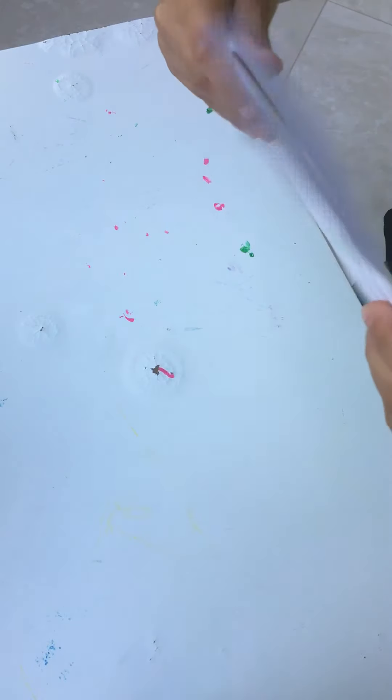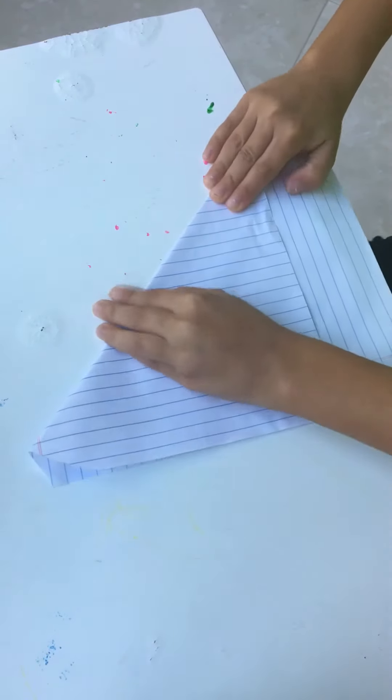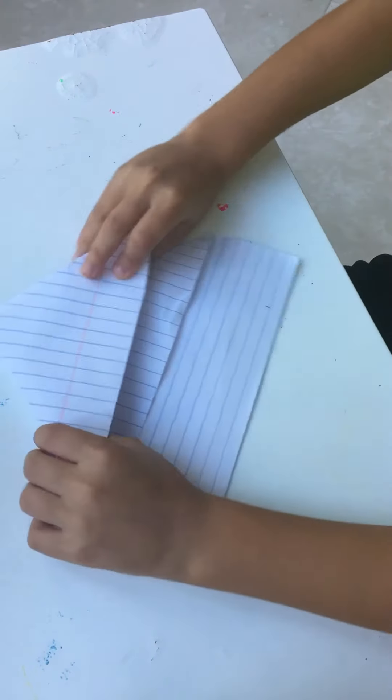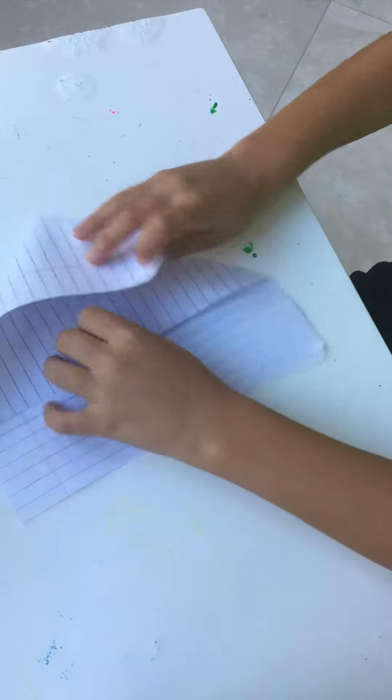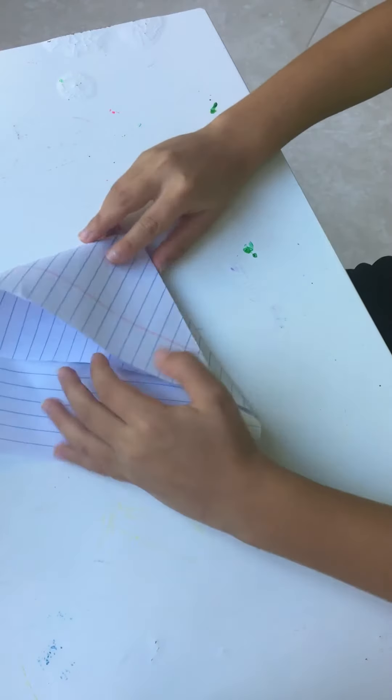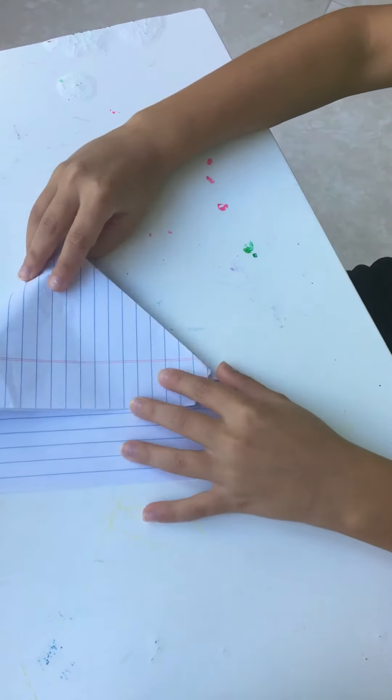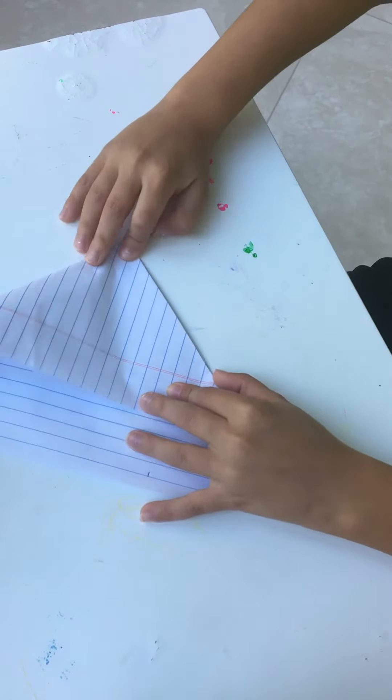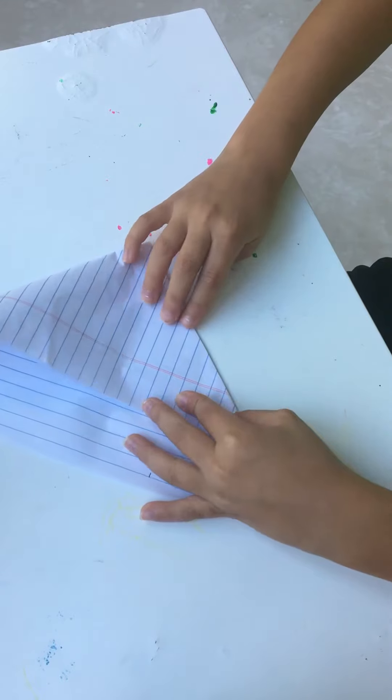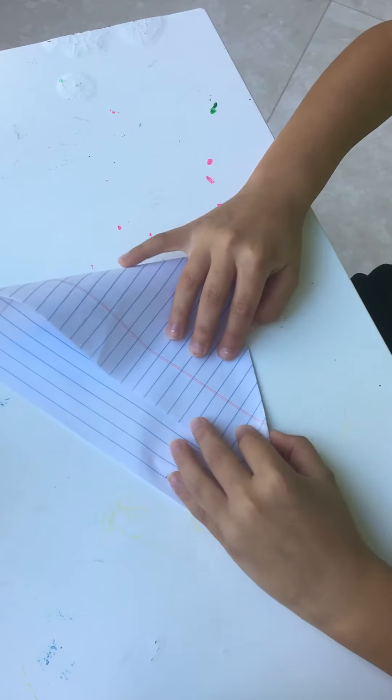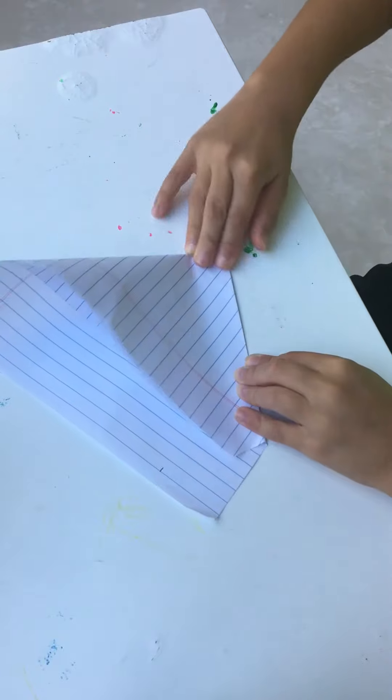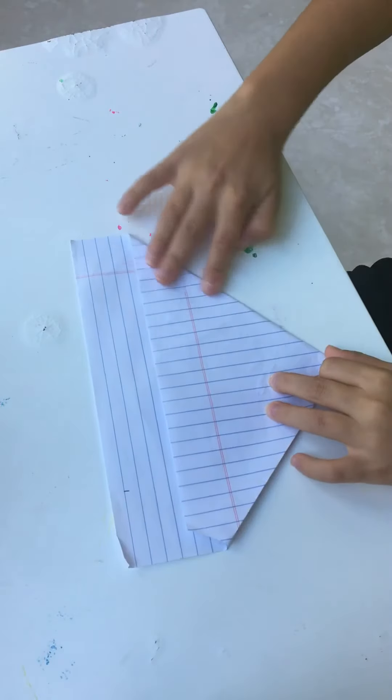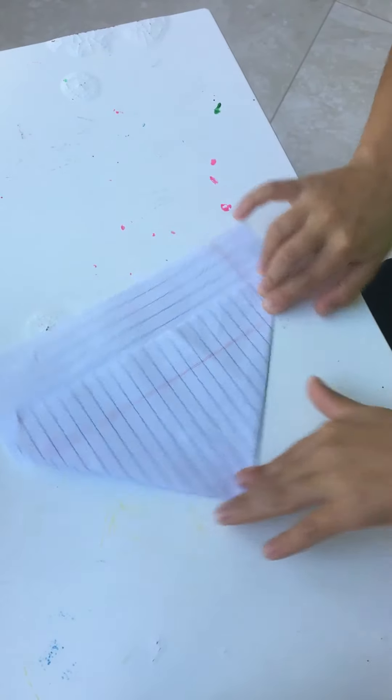Next step, we're gonna add this corner and bring it all the way down to here. Mine looks a little different because I have a ripped piece of paper but just try your best. Make sure it's neat because if it's not that neat it won't fly that well.